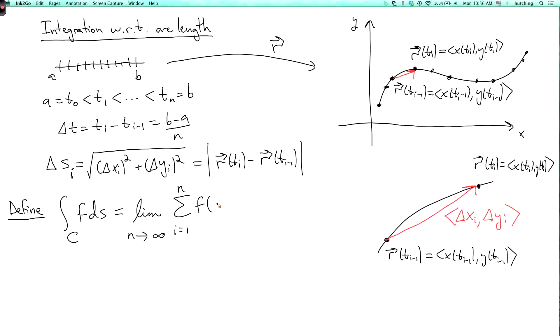So I'm going to pick some sample point ti star in the interval from ti minus 1 to ti. So I'm going to have f of r of ti star times delta si. So that's the definition.